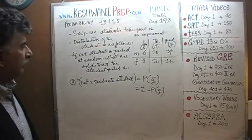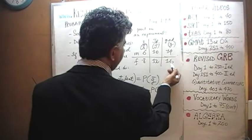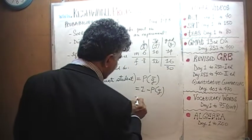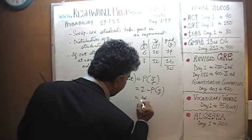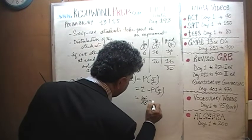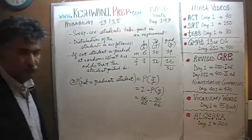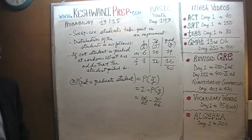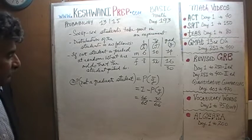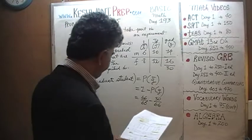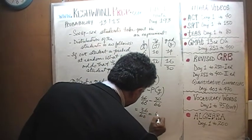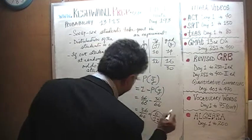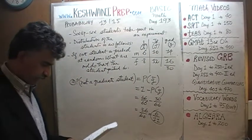How many graduate students do we have? We have 14 plus 16, which is 30. So the odds of picking graduate students is 30 out of 66. Therefore the odds of not picking a graduate student is 66 minus 30 over 66, which is 36 out of 66. The final answer is 6 over 11.